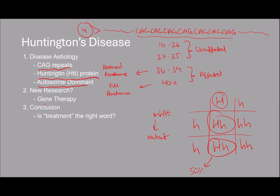Expanding a little bit on the protein: the huntingtin protein is mainly found in the brain - in those particular areas, within neurons. It is found in other areas such as the liver and other parts of the body, but it's mainly within the brain, and it interacts with loads of different proteins. When it becomes mutant - because it has a different DNA code - the protein might interact with different proteins than it's meant to. The main point is it's no longer working how it should be. It's a mutant protein, which is a problem because it affects the brain, affects movement, and there was no current treatment or cure.